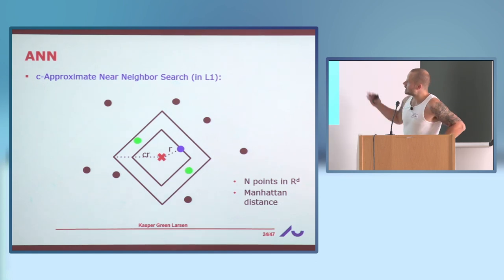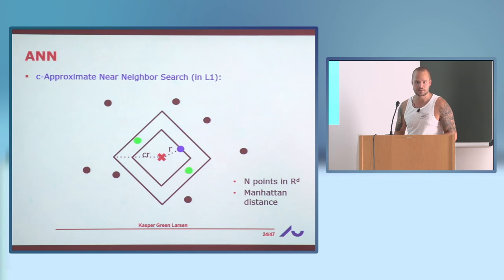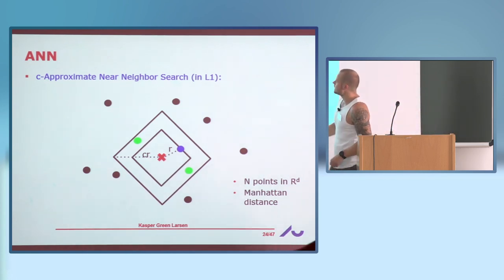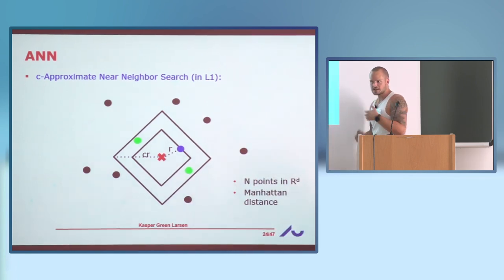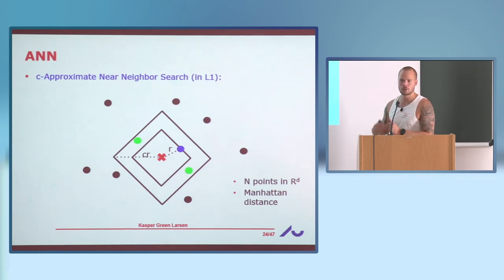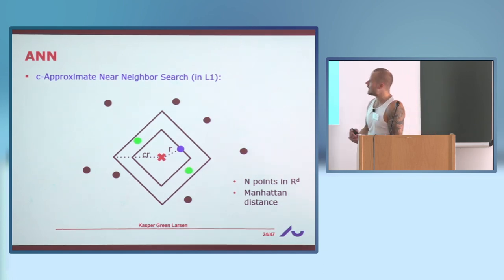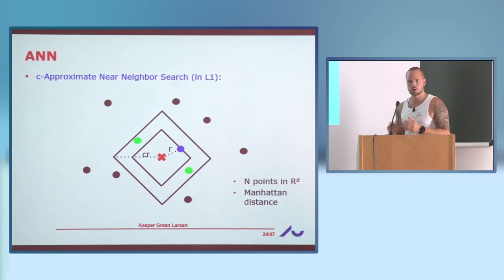In nearest neighbor search you're given N points in D-dimensional space, using the L1 distance (Manhattan distance). You get a query and want to find the nearest neighbor. In general there are reductions from the strong exponential time hypothesis saying this problem is really hard — you have to look at all the points. So what people do in practice is look at approximate versions: if my nearest neighbor has distance r, I have to find some point of distance at most c times r for some constant approximation factor.